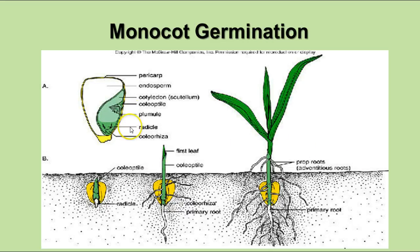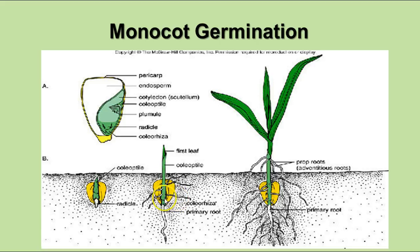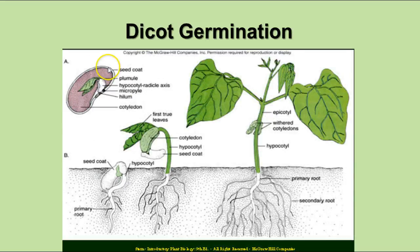In monocots, you have one cotyledon — the seed leaf — and the endosperm is inside the seed. As it grows, the radicle or root grows down, the coleoptile — the first part of the sprout — comes out the top, and the cotyledon stays below ground. This shows several stages in the development of a monocot. In dicots, the endosperm is contained in the cotyledons, which do emerge from the ground.